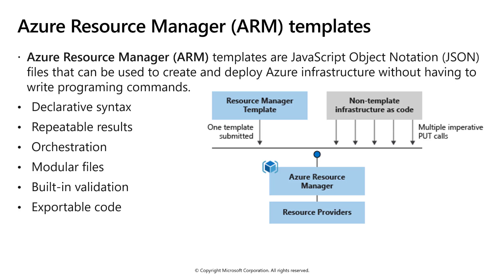The Azure Resource Manager, or ARM, is not just a management plane, but a full management engine for resources in Azure. If you want to create, update, or delete resources in Azure, you can do so with ARM templates. ARM templates are just JavaScript Object Notation, or JSON, files. Azure Resource Manager enables you to repeatedly deploy your app and have confidence that your resources are deployed in a consistent state. You define the infrastructure and dependencies for your app in a single declarative template. This template is flexible enough to use for all of your environments, such as test, staging, or production. If you create a solution from the Azure Marketplace, the solution will automatically include a template that you can use for your app.